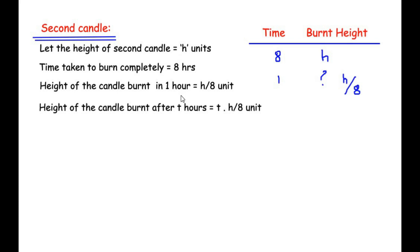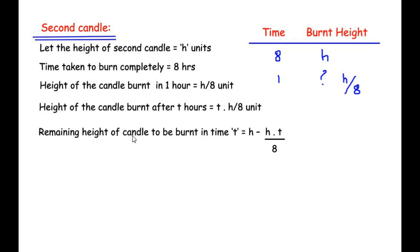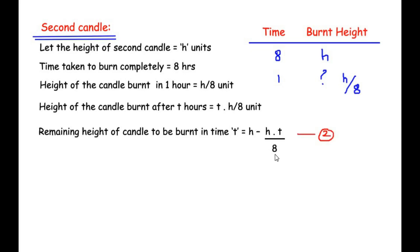These steps are the same as for the first candle — only the hours change. The remaining height of the second candle after time t is the total height h minus the height already burnt, that is h minus t times h over eight. Let us consider this as equation two. In the question it is stated that the height of the first candle should be half the height of the second candle, so let us frame an equation.